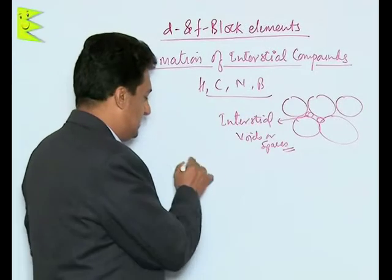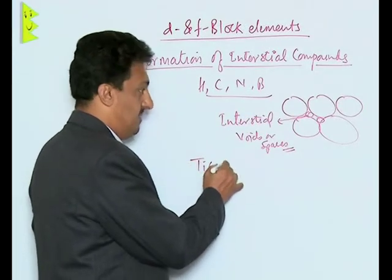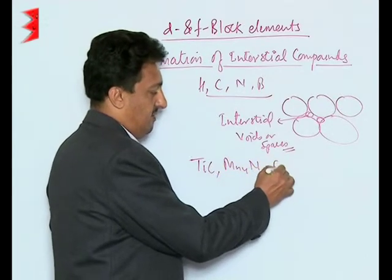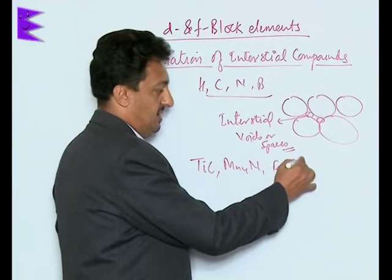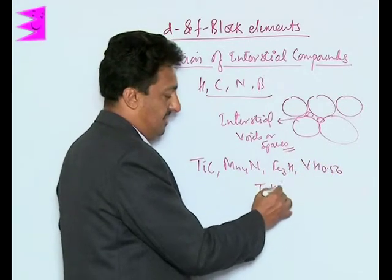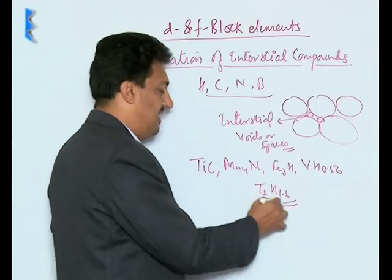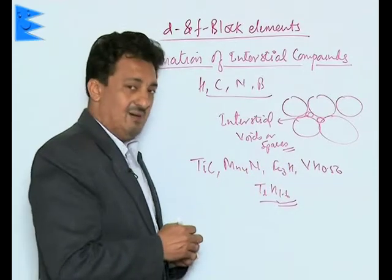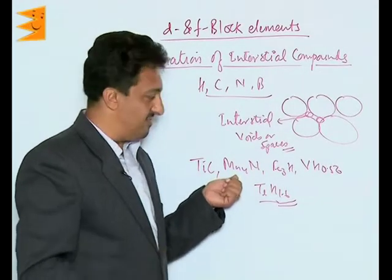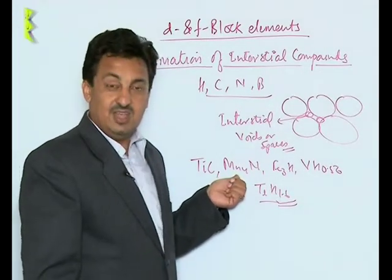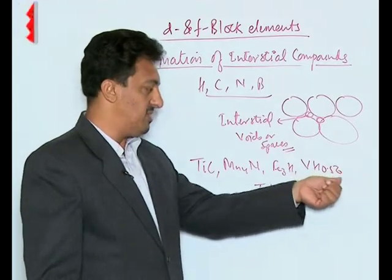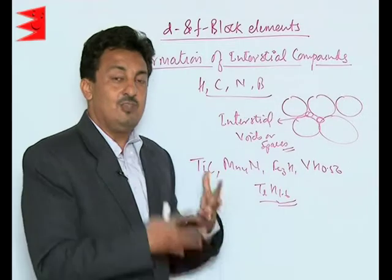Examples include titanium carbide (TiC), manganese nitride, iron hydride, vanadium hydride VH₀.₅₆, and titanium hydride TiH₁.₆. We cannot derive oxidation states from these formulas because the ratios — 1.6, 0.56, and others — are all non-stoichiometric.